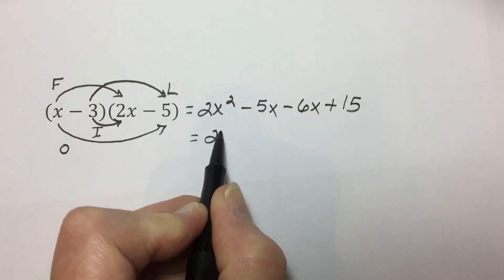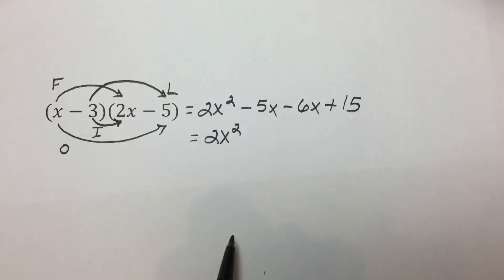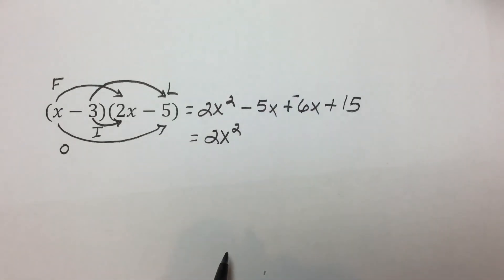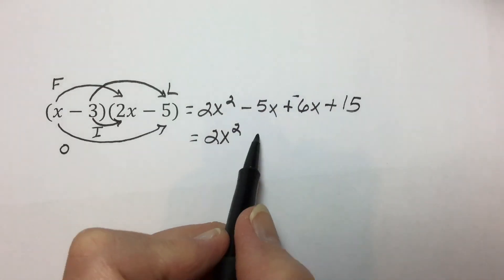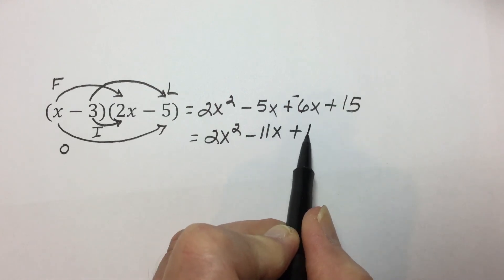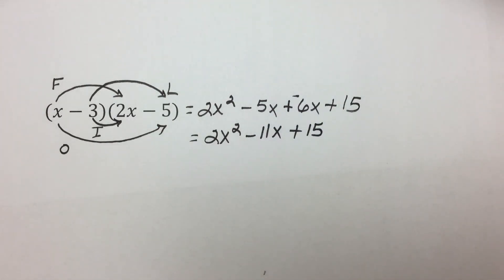Simplifying here, we have no term to add to the X squared, but negative 5X plus negative 6X, using the rule of subtraction, results in negative 11X plus that constant term of 15 for our final answer.